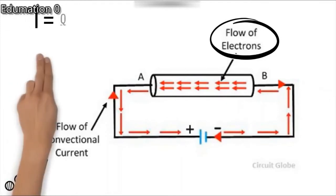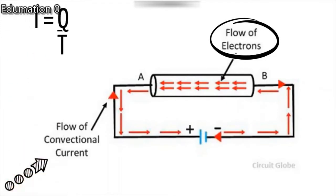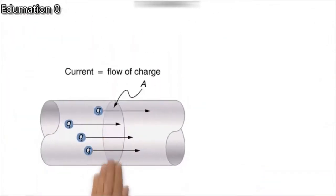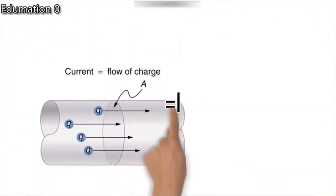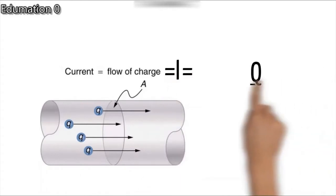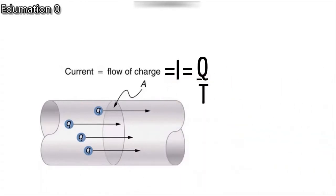We can derive the formula of current from its definition. Rate of flow of charges, that is electric current I, is equal to charge Q by time T.